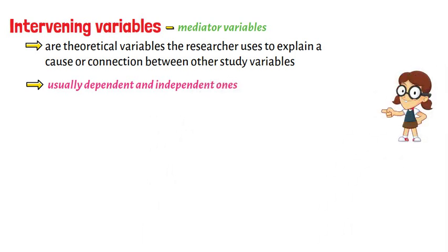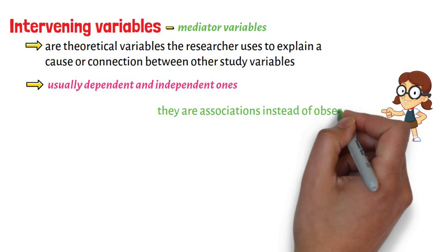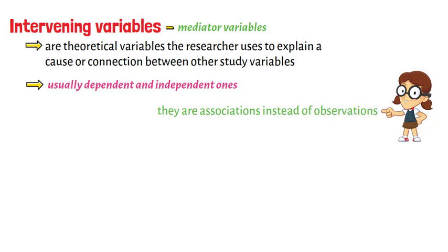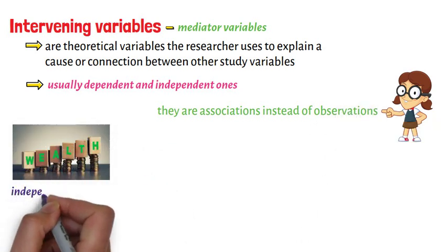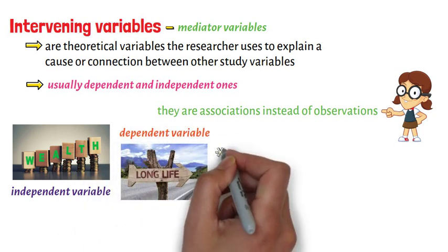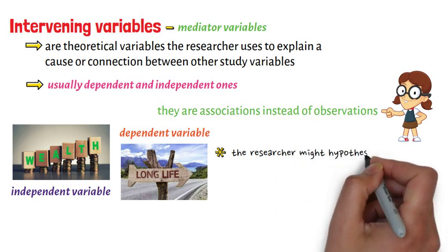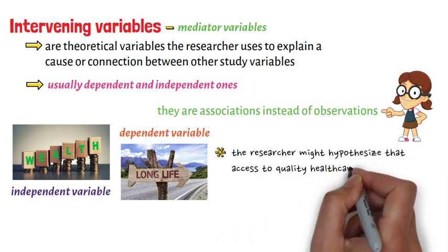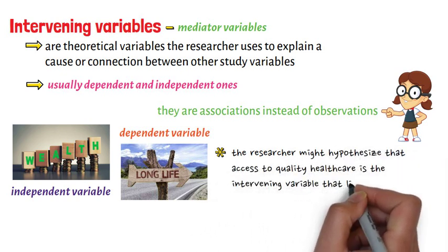It must be noted that they are associations instead of observations. For example, if wealth is the independent variable and a long lifespan is a dependent variable, the researcher might hypothesize that access to quality health care is the intervening variable that links wealth and lifespan.